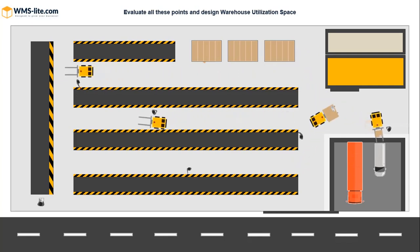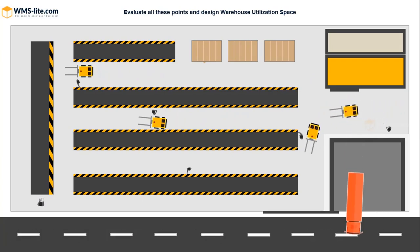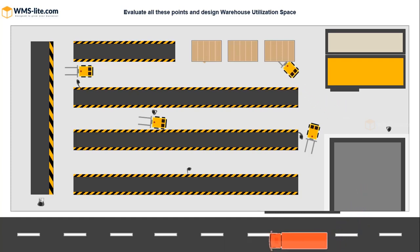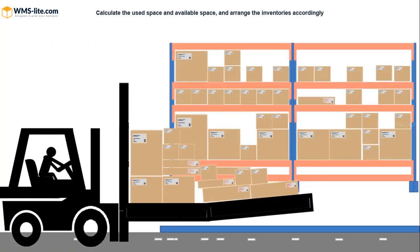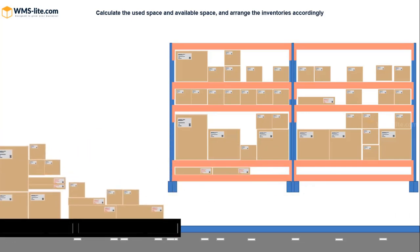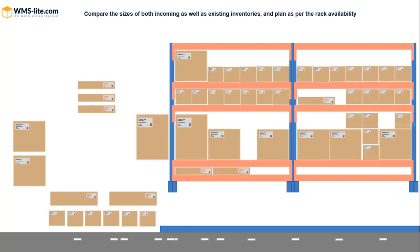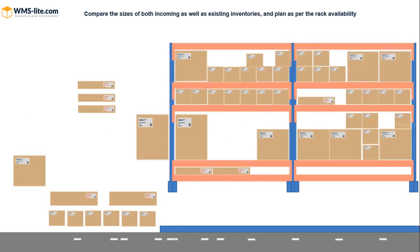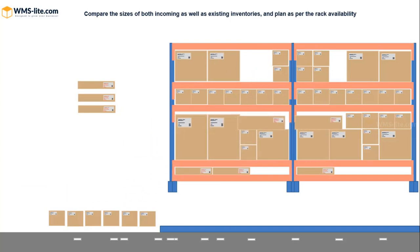Here, the designer first compares the three points above and starts thinking from a storage aspect. How many racks in different sizes and shapes can be included within the available space of the warehouse is the first priority, along with provided walkways to reach each and every corner of the racks. Calculate the used space and available space, and arrange the inventories accordingly. Compare the sizes of both incoming as well as existing inventories and plan as per the rack availability.